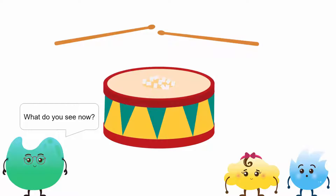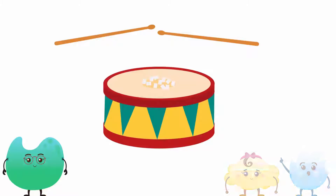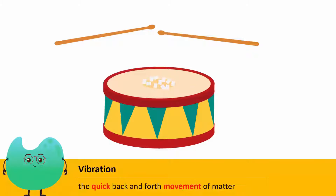What do you see now? Oh, the pieces of paper are jumping. The quick up and down or back and forth movement is known as a vibration.